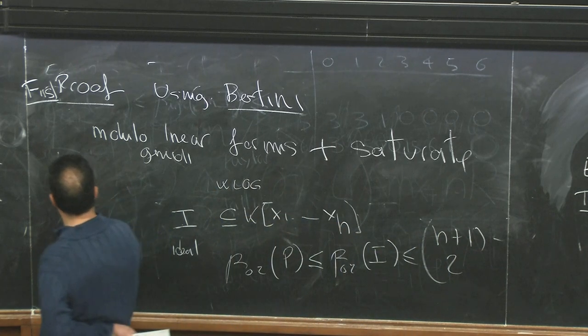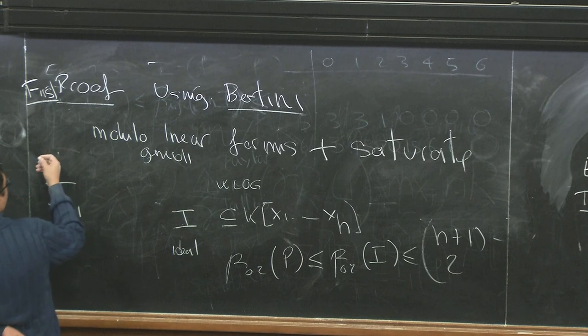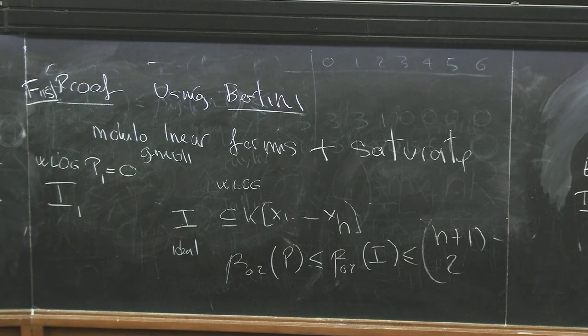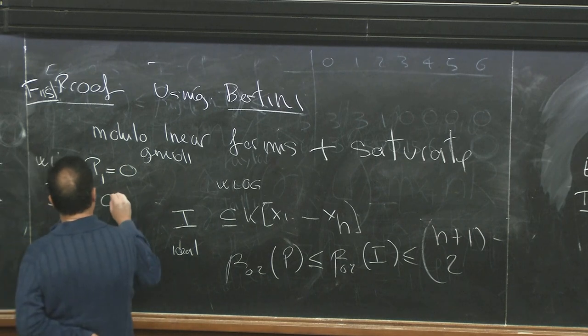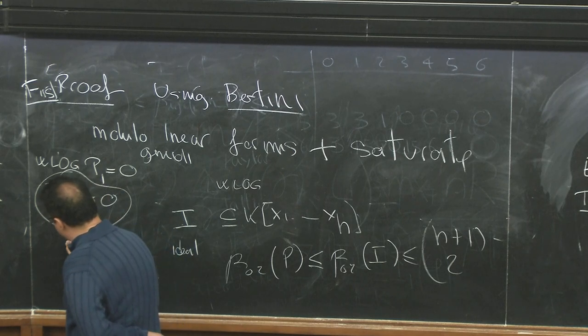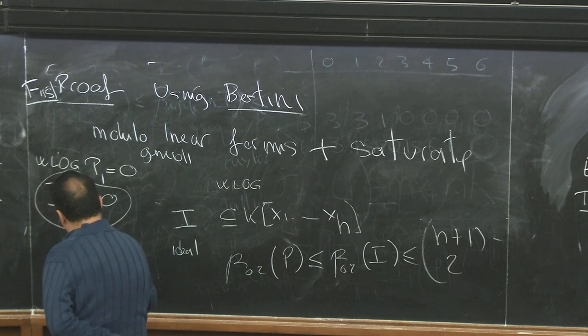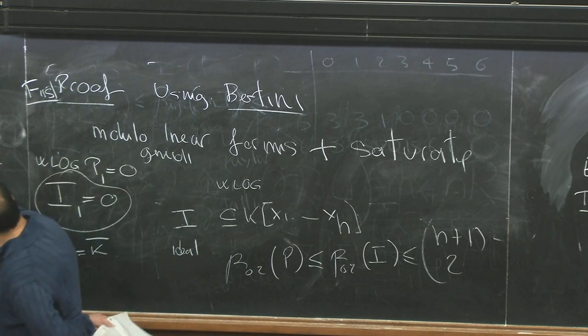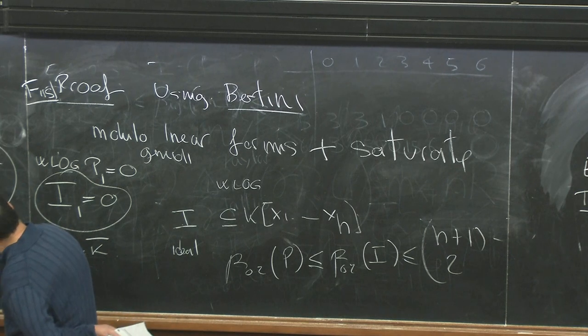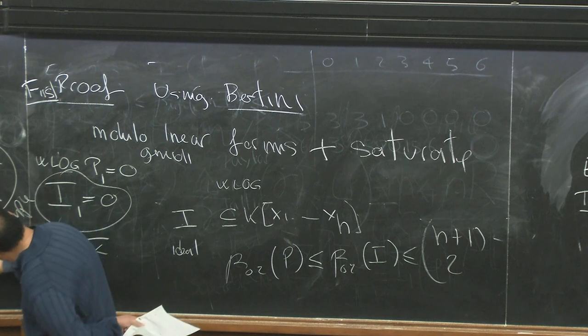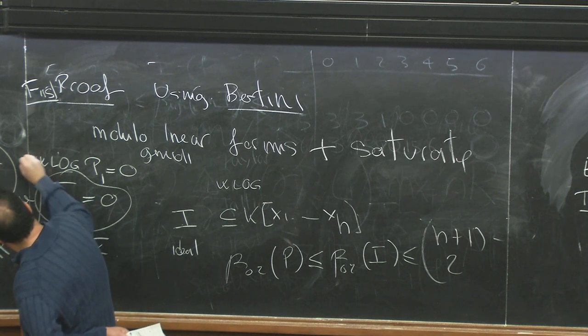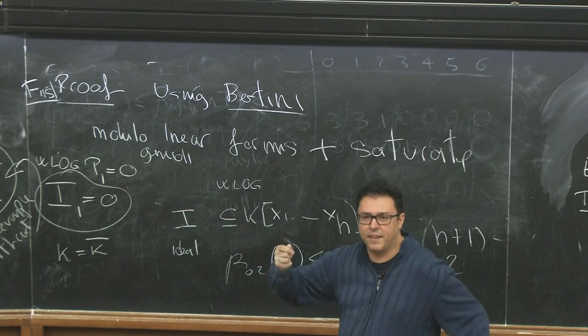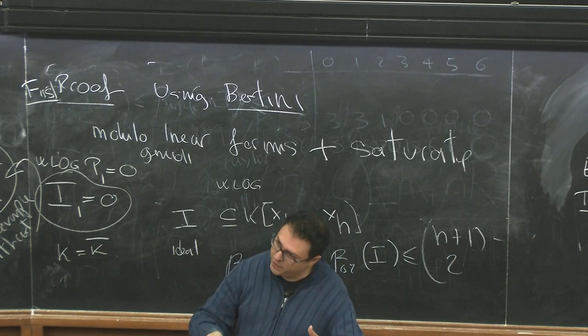any linear form in this process. This is thanks to the fact that the field was algebraically closed. There are counterexamples otherwise. Counterexamples without this assumption the field is algebraically closed. That's the part where you need it, and because as you saturate the ideal gets larger.